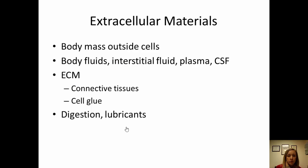Extracellular materials is anything that's not within a cell in the body. This includes interstitial fluid, plasma, cerebrospinal fluid, and other bodily fluids. The extracellular matrix is found in connective tissue — it's an extracellular material that is part of tissue, kind of like cell glue that holds things together.